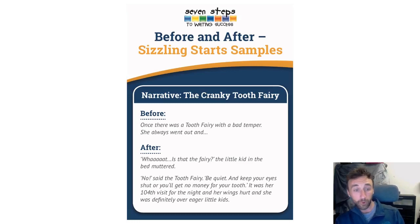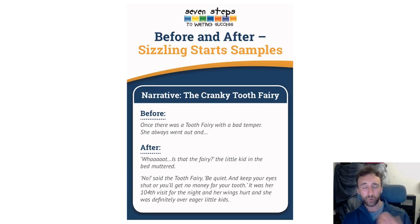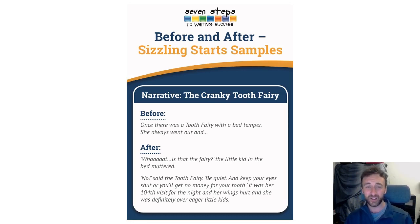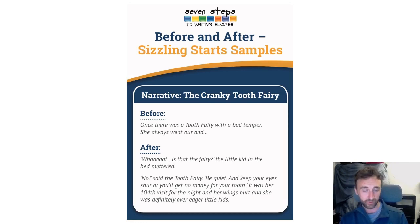We've got the "before" version: Once there was a tooth fairy with a bad temper, she always went out and blah blah blah blah blah. Already it's sort of quite boring — saying there's a tooth fairy, she's got a bad temper, she always went out and did this and did this and did this. Before you know it you're just listing things. So let's look at an up-leveled version, the "after".